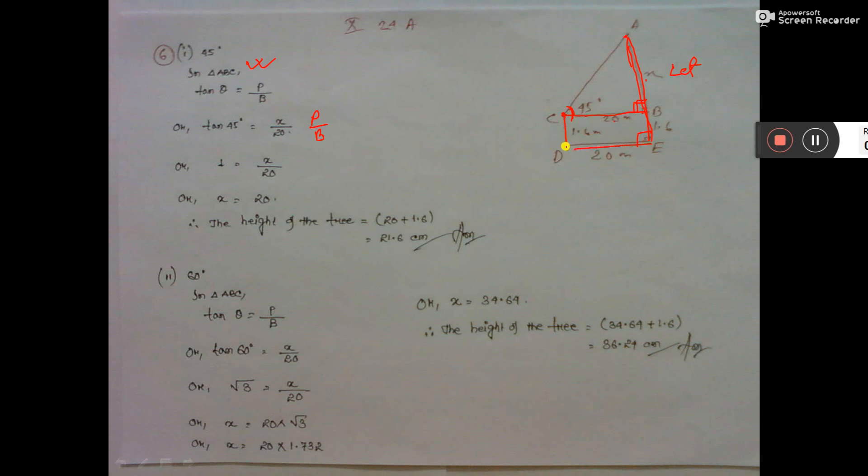This is 20. The boy is standing 20 meters away, so this is 20, and this is also 20. Tan 45 value is 1. Now do cross multiplication. The value of X is 20.